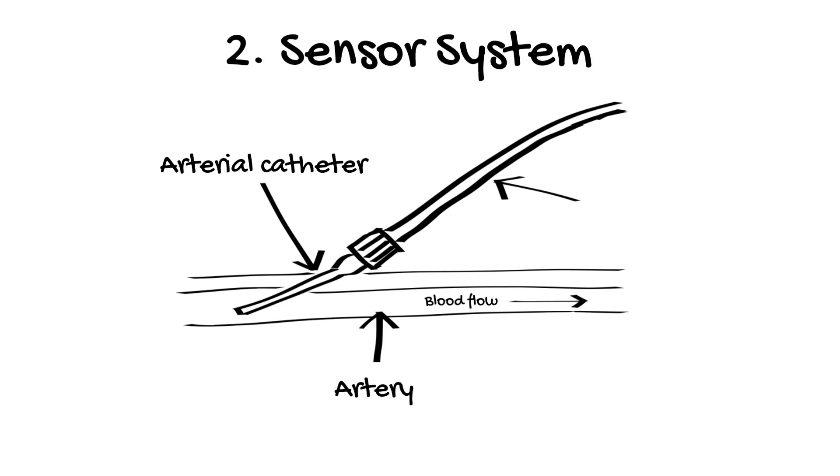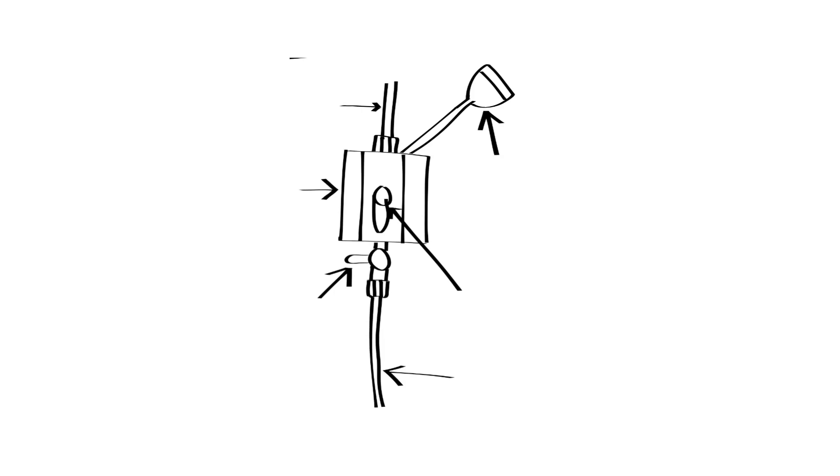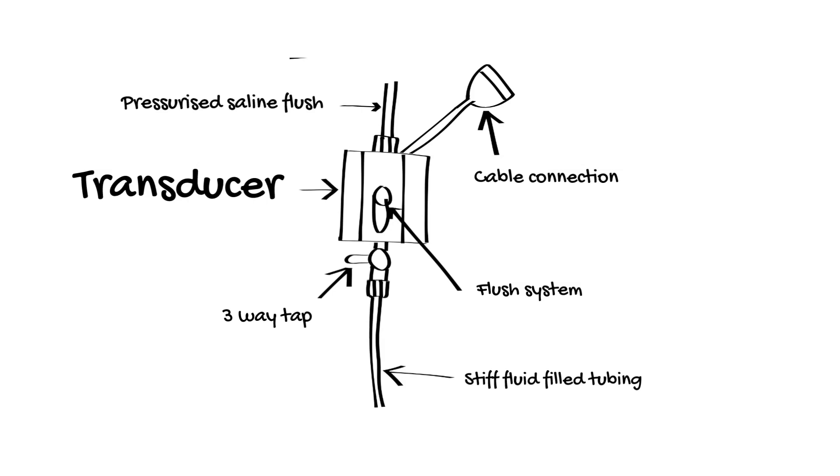This is connected to some stiff tubing which contains a continuous column of fluid without any air bubbles inside. The reasons for this we'll review later. The next component in the system is a transducer. A transducer is an electrical component which converts one form of energy into an electrical signal. In this case, the form of energy is pressure.